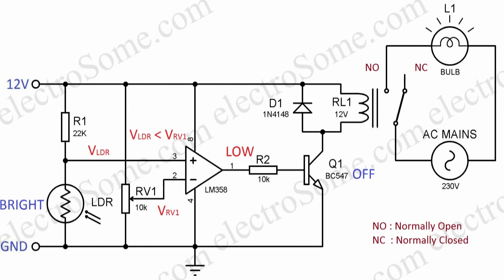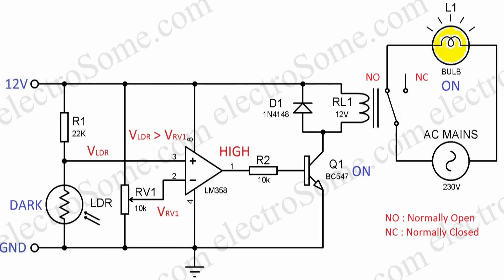So when bright light falls on the LDR, voltage across it will be low, and thus the comparator output will be low, so the transistor, relay, and bulb will be in off-state. When the light falling on the LDR becomes dark, voltage across it will be high, which makes the output of the comparator high, turning on the transistor, relay, and bulb.